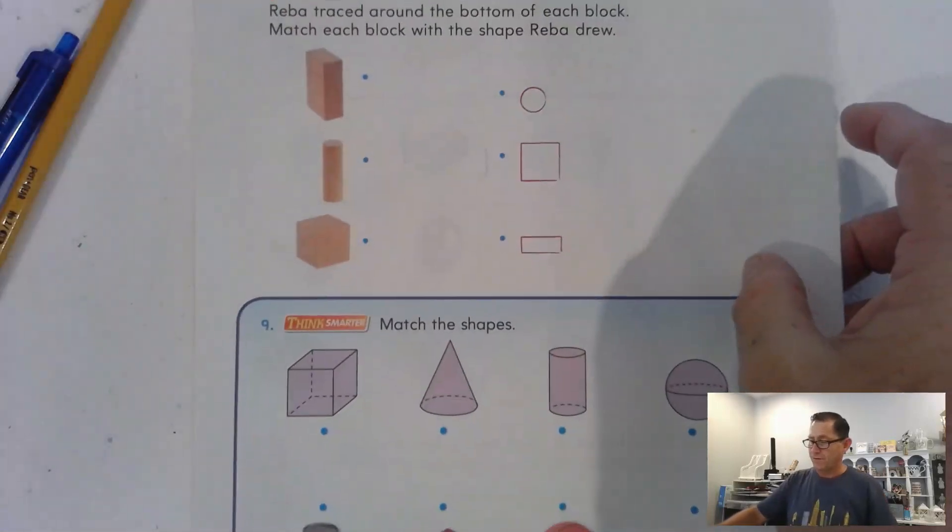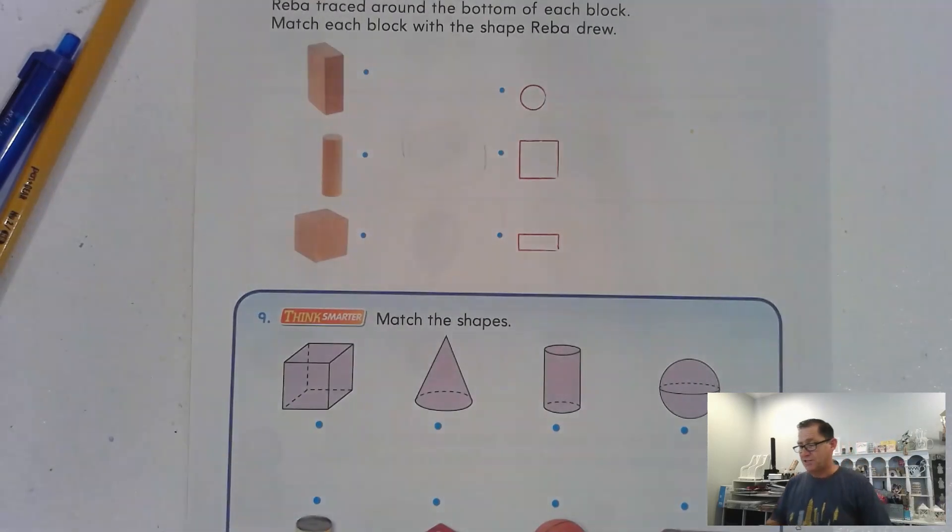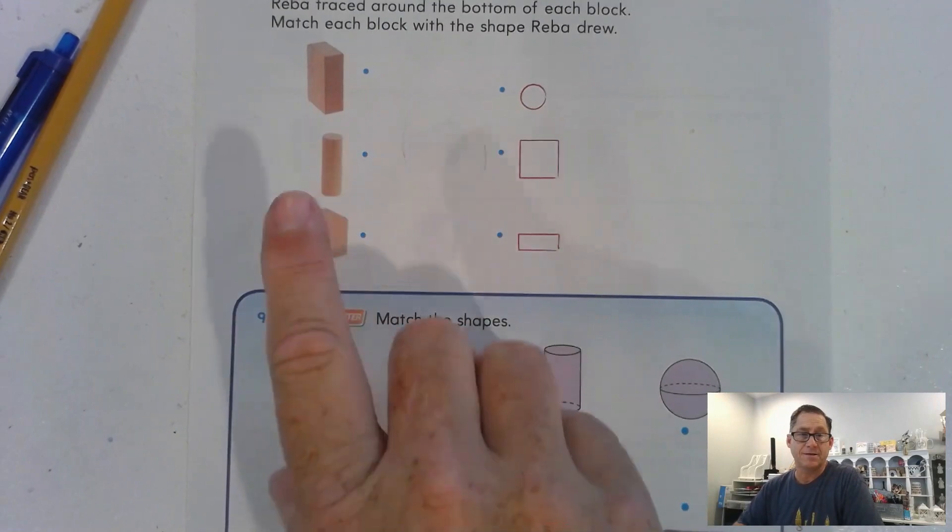All right. Reba traced around the bottom of each block. So, match each block with the shape Reba drew. So, we have a rectangular prism. We have a cylinder. And we have a cube.